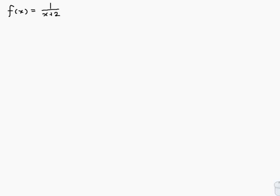The domain of f is all the possible x's that we can put into the function — that is, all the x's where the function is defined. Let's look at where f is undefined. f is undefined when the denominator is 0; that's how it works for rational functions. So when x plus 2 is equal to 0, that is when x is equal to minus 2.